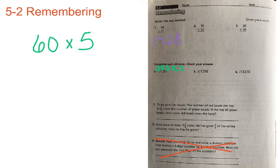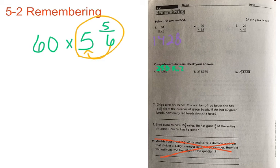So we're going to take 60 and we're going to multiply it by 5 and 5/6. And remember when we're multiplying a whole number by a mixed number, we have to take our mixed number and we have to turn that into an improper fraction. 6 times 5 is equal to 30 plus 5 is equal to 35 and our denominator stays the same. So 35 over 6.